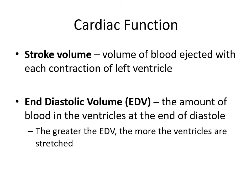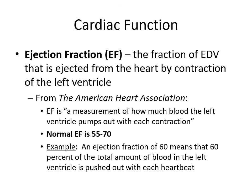Talking more about cardiac function: stroke volume is the volume of blood ejected with each contraction of the left ventricle. End diastolic volume is the amount of blood in the ventricles at the end of diastole — the greater the EDV, the more the ventricles are stretched. Ejection fraction is the fraction of EDV ejected by contraction of the left ventricle. Per the American Heart Association, ejection fraction measures how much blood the left ventricle pumps out with each contraction, with a normal ejection fraction of 55 to 70%. An ejection fraction of 60 means that 60% of the total blood in the left ventricle is pushed out with each heartbeat.